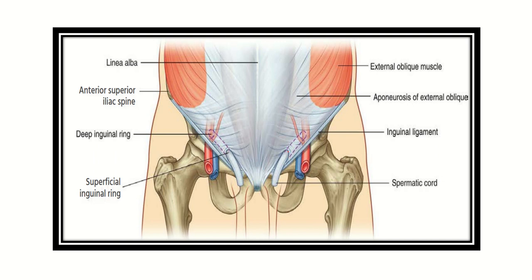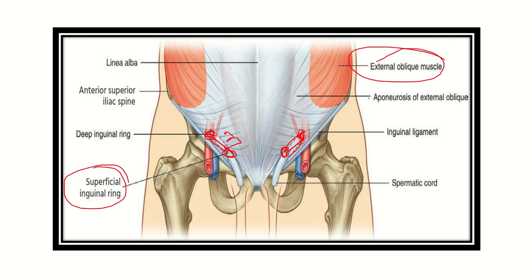In this picture we can see the superficial inguinal ring and the deep inguinal ring. The inguinal canal runs from the superficial inguinal ring to the deep inguinal ring. At the superficial inguinal ring, we can see this fascial layer, which is derived from the external oblique muscle. So the anterior wall at the superficial inguinal ring is formed by the external oblique muscle.